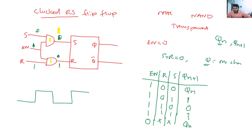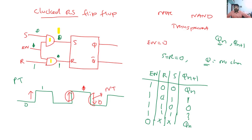When enable is high, we can do triggering using a clock pulse. A transition from zero to one (low to high) is called positive edge triggering (PT). A transition from high to zero (high to low) is called negative edge triggering (NT). Most circuits are designed with either positive or negative edge triggering. The flip-flop is only transparent — meaning inputs affect output — during that very small nanosecond window at the triggering edge. This is the clocked RS flip-flop.